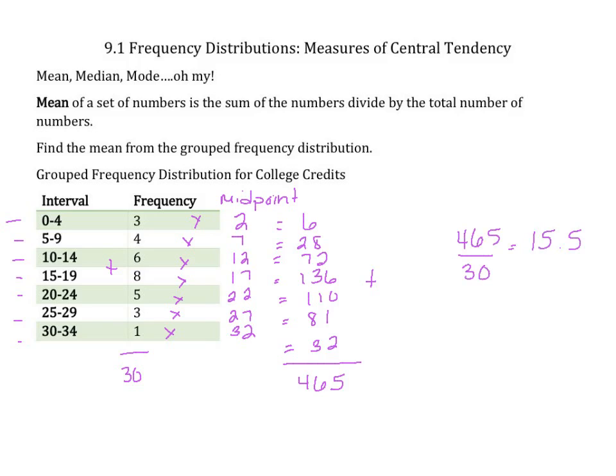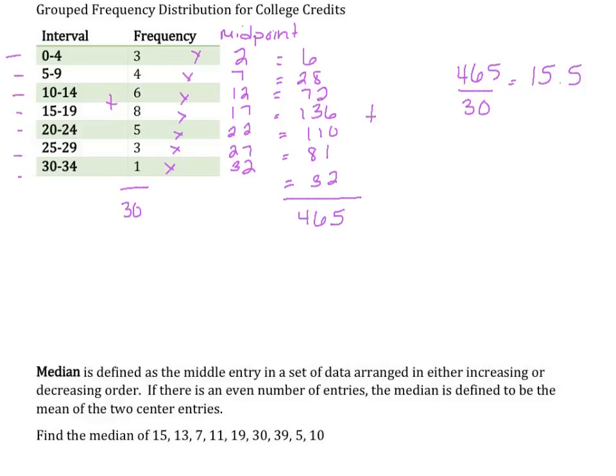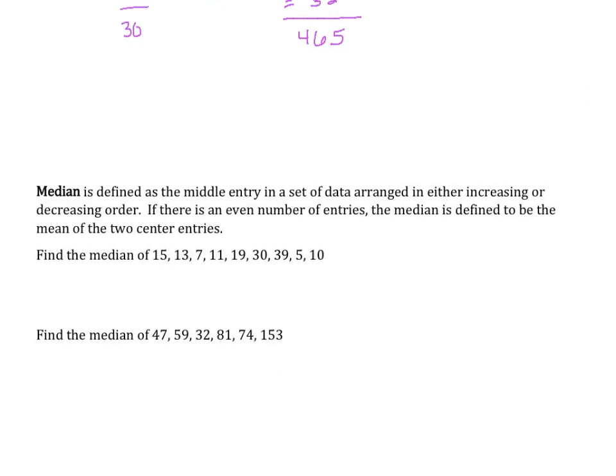It's a little different finding the mean from a frequency table versus just straight up adding all of them and dividing. Median is defined as the middle entry in a set of data arranged in either increasing or decreasing order. If there is an even number of entries, the median is the mean of the two center entries.